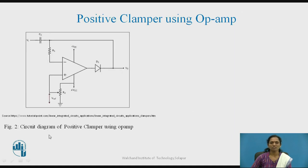Figure 2 shows the circuit diagram for a positive clamper using an operational amplifier, where the capacitor C1 plays a very important role in clamping the signal. The resistor should be of very large value so as not to provide a discharge path for the capacitor. The input signal is applied to the inverting terminal of the op-amp, the reference signal is applied to the non-inverting input, and the diode is connected in the feedback path to provide precise clamping action.